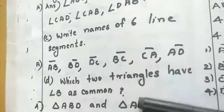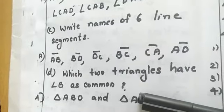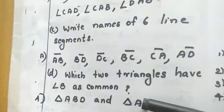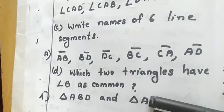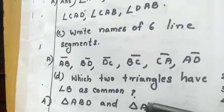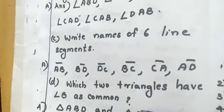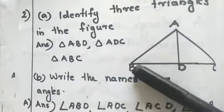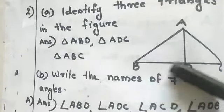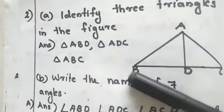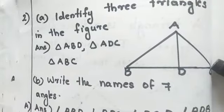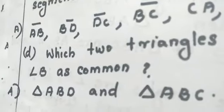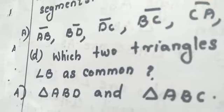Next question: which two triangles have angle B as common? Common means which angle appears again in both triangles. Angle B is common to triangle ABD and triangle ABC.